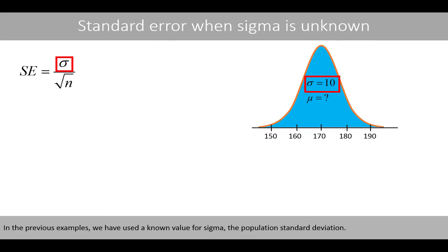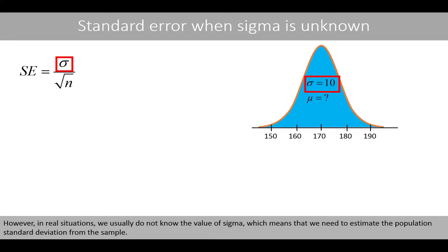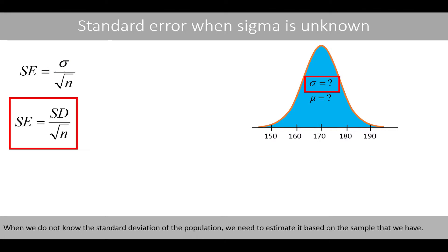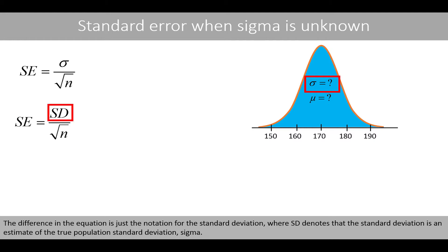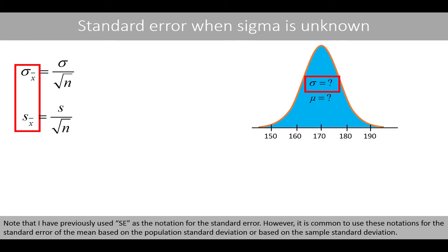In the previous examples, we have used a known value for sigma, the population standard deviation. However, in real situations, we usually do not know the value of sigma, which means that we need to estimate the population standard deviation from the sample. When we do not know the standard deviation of the population, we need to estimate it based on the sample that we have. The difference in the equation is just a notation for the standard deviation, where SD denotes that the standard deviation is an estimate of the true population standard deviation sigma. Note that SE is the notation for the standard error of the mean based on the population standard deviation or based on the sample standard deviation.